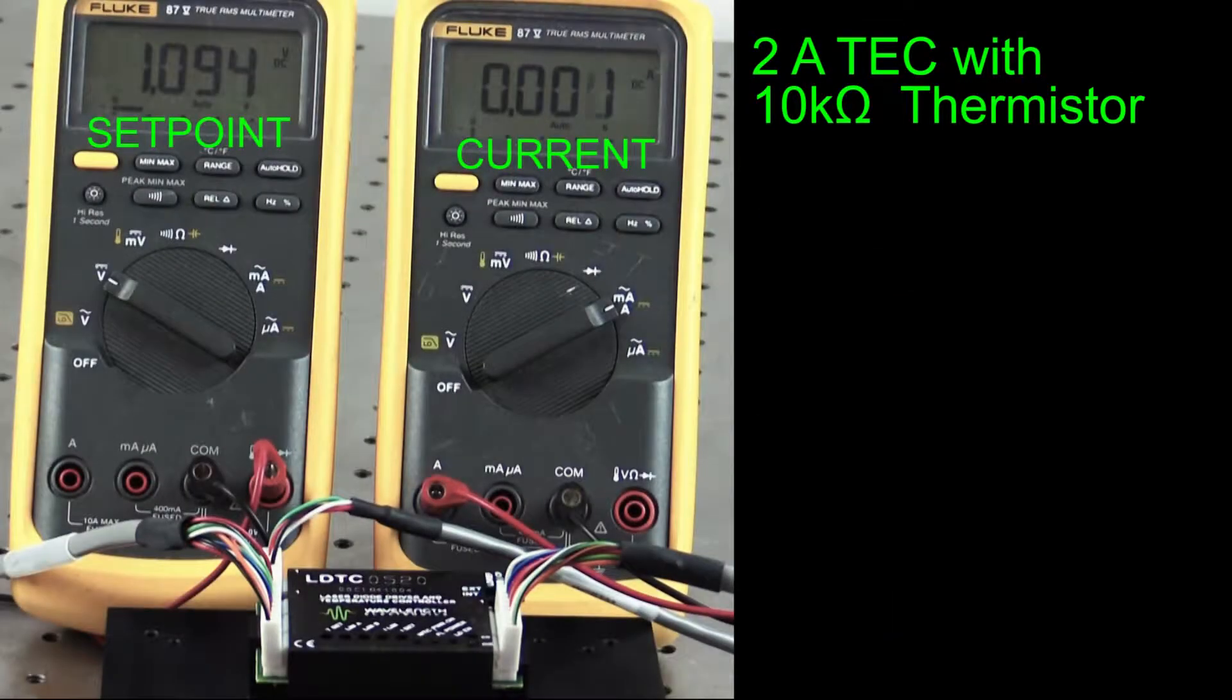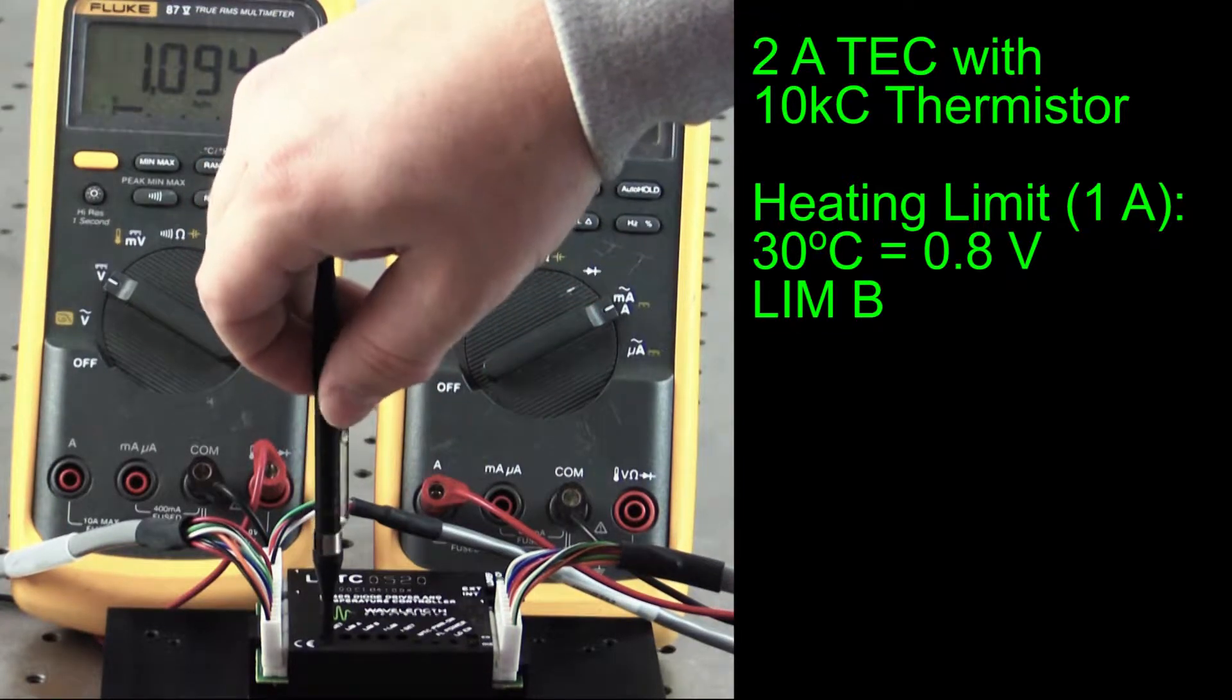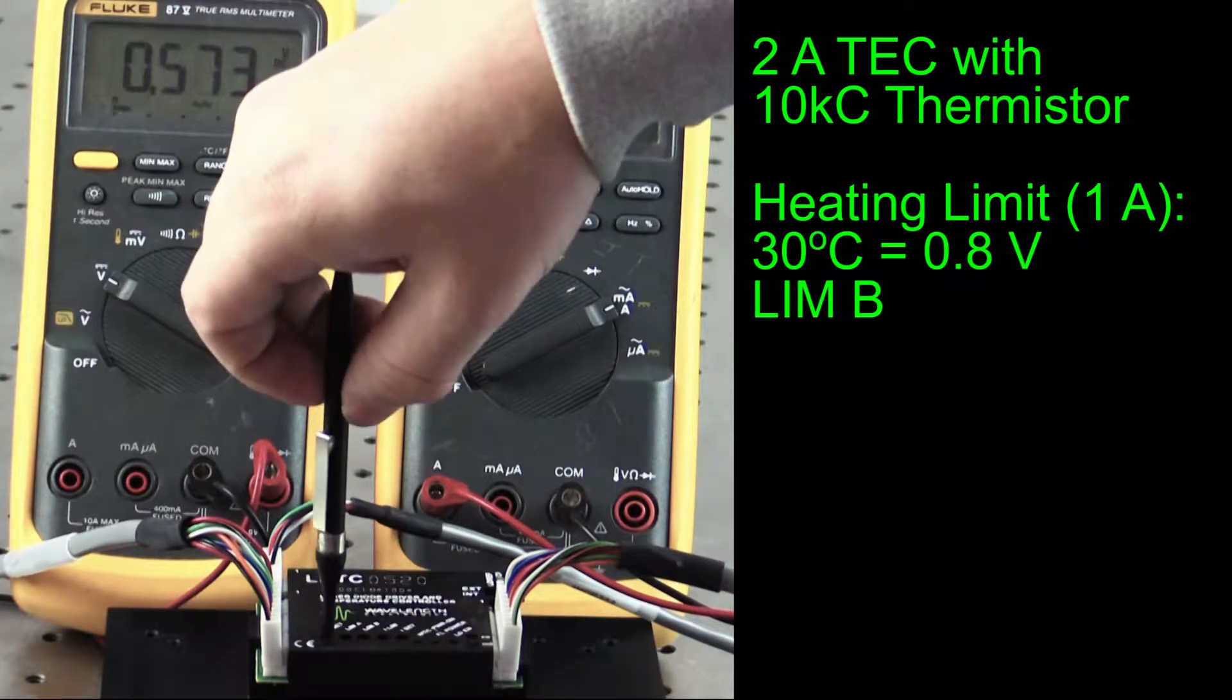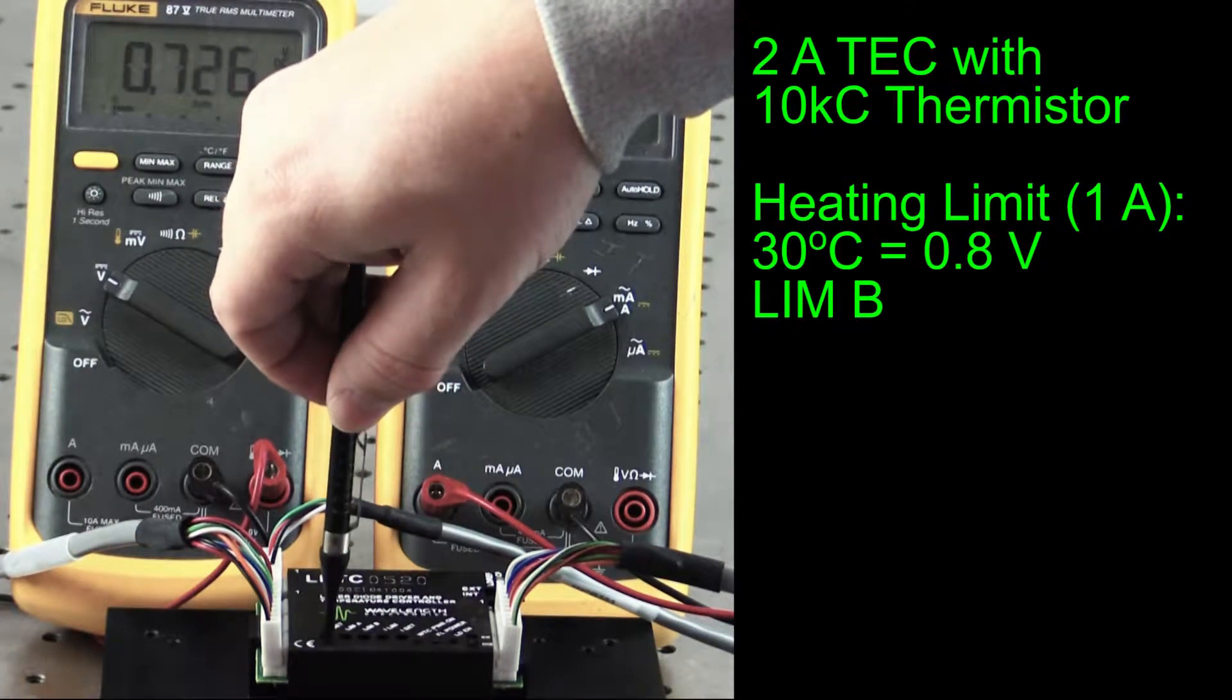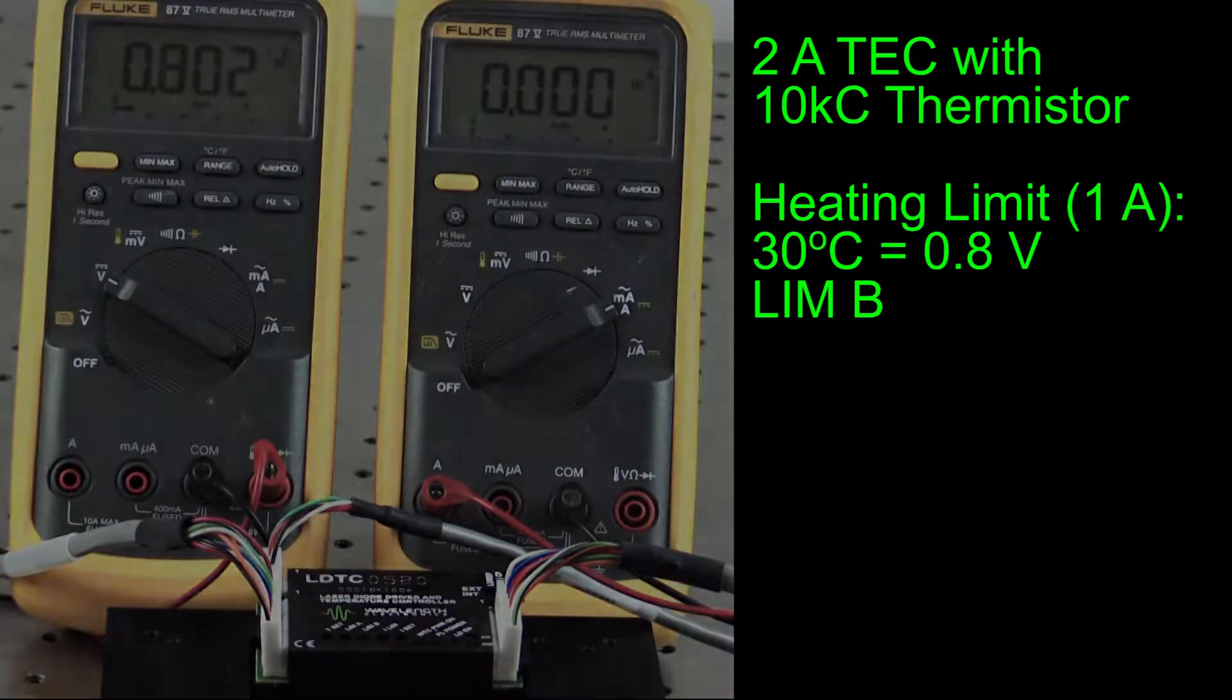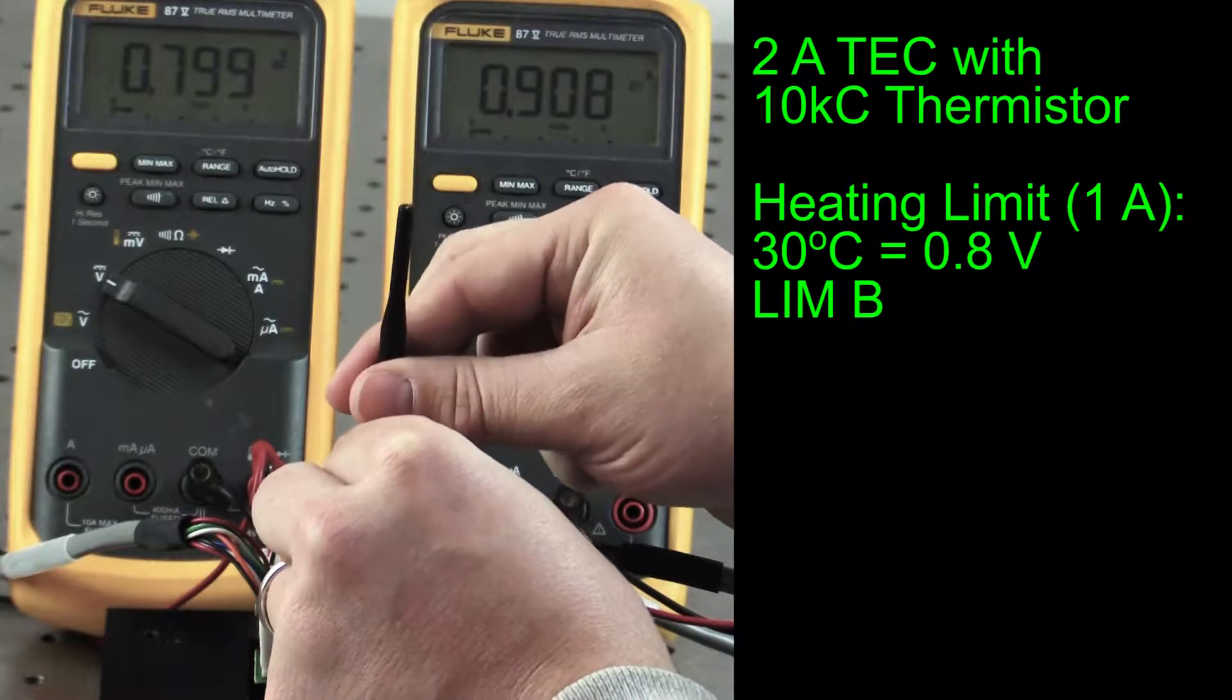We are using a 2 amp thermoelectric and will set the limits to plus and minus 1 amp. To set the heating current limit, a set point above ambient is required. Turn the TSET trim pot clockwise until the SET Tmon voltage is 0.8 volts, equivalent to 30 degrees C. Adjust the LIMBY trim pot clockwise until the ammeter reads 1 amp.